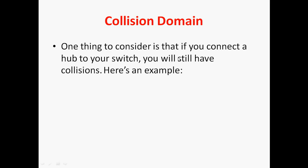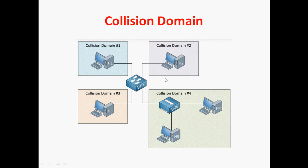Here we can see that in a switch with four PCs, each port has an individual collision domain so all four PCs can send and receive data simultaneously. One thing to consider: if you connect a hub to your switch, you will still have a collision. For example, if one switch port is connected to a hub with two PCs, those two PCs still face a collision domain — only one can send or receive at a time. In a switch, CSMA/CD is disabled by default, but if you connect a hub, it should be enabled.